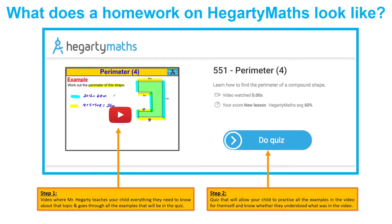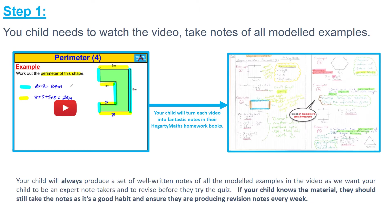So what will that look like once they've clicked on that? A Hegarty homework has two elements: it has a video and it has a quiz. This is an example of a perimeter one — there is the video on the left and then the quiz on the right. They will watch the video and whilst they're watching they can pause it and make notes in their learning journal.